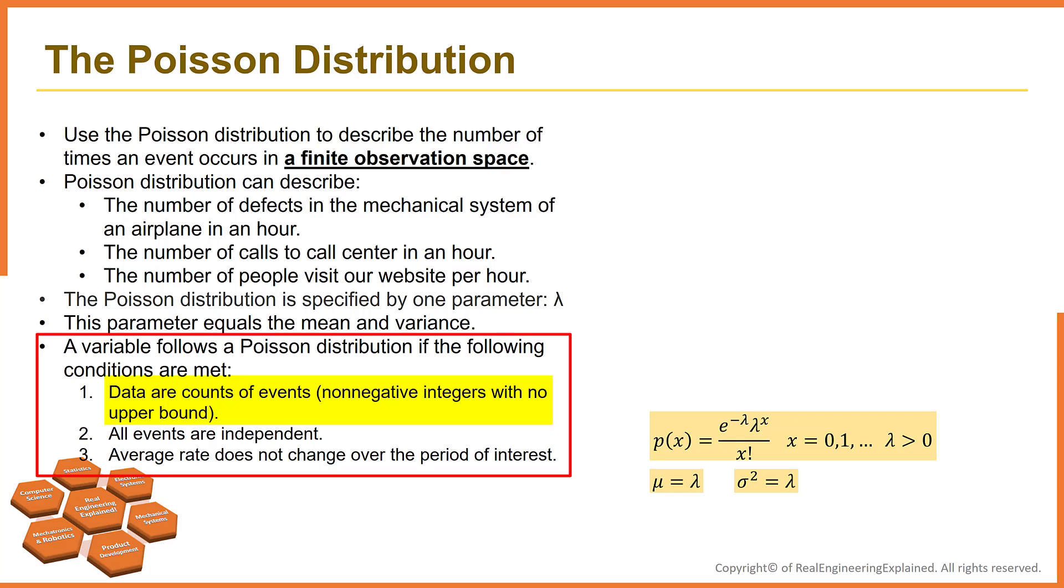The number of defects in the mechanical system of an airplane in an hour could be 5, 10, or even 100. There is no upper bound. The number of calls to the call center in an hour could be 5, 10, or 100. The number of people visit our website per hour could be 5, 10, or 200 per hour.